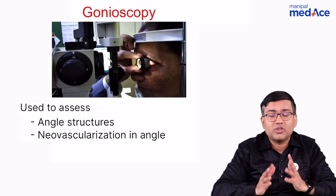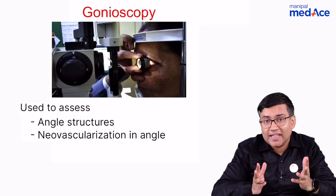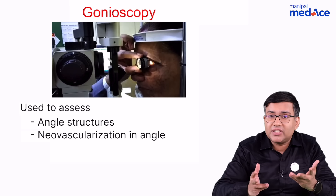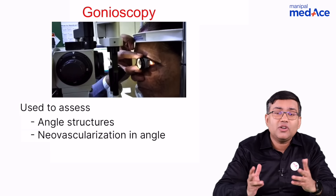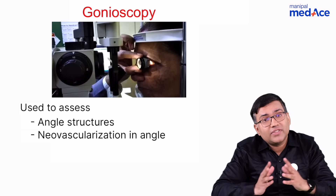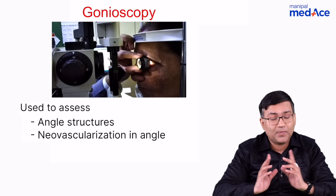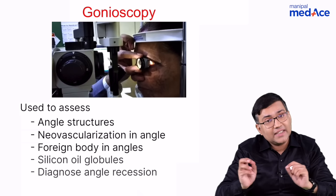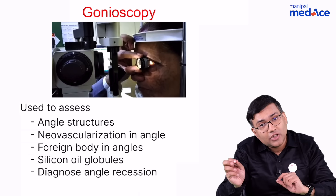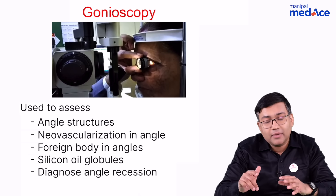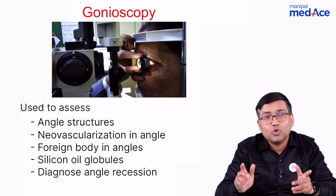Gonioscopy can also tell you about neovascularization happening in the angles, which is a feature of proliferative diabetic retinopathy or central retinal venous occlusion. Additionally, if there is a foreign body or silicon oil globules in the angles, that can also be detected by gonioscopy.